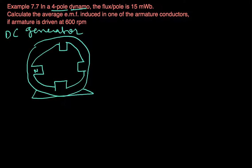So it's a 4-pole machine: if this is a north pole, this will be south pole, this will be north pole, and this will be south pole, and the conductors will be rotating inside. Flux per pole is 15 milliwebers — that means 15 milliwebers of flux is coming out of each north pole: 15 mWb from here, 15 mWb from here, and 15 mWb from here.